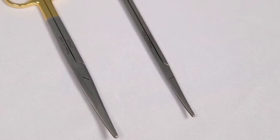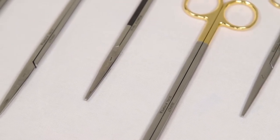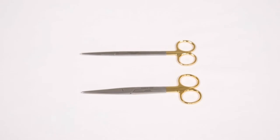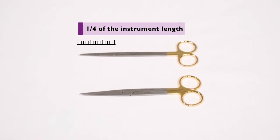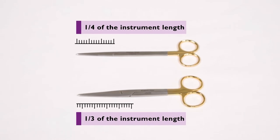Compared to Mayos, Metzenbaums have a slimmer profile. The blade size relative to the instrument length also differs between the two styles. Metzenbaum scissor blades occupy approximately one-quarter of the overall instrument length, whereas Mayos scissor blades occupy approximately one-third.